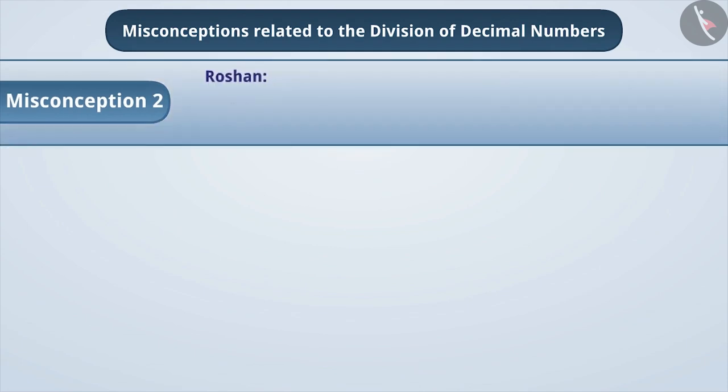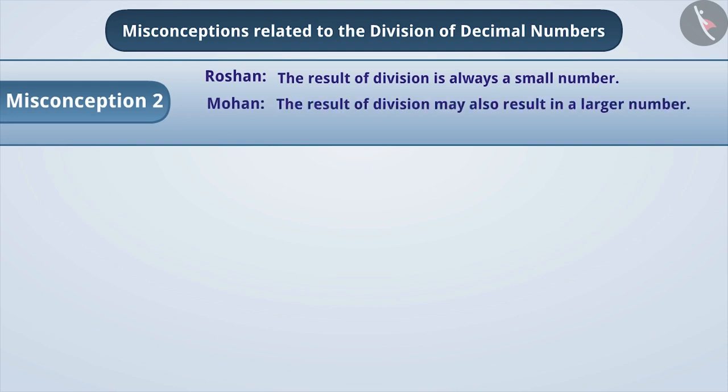Misconception 2. Roshan and Mohan were discussing the concept of division. Roshan said that the result of division is always a small number. While Mohan said that the result of division can be a large number as well. So, tell us who is right.